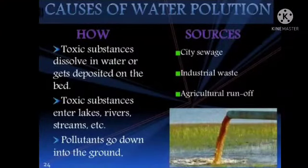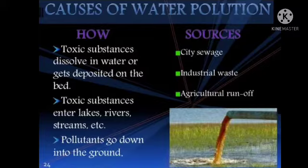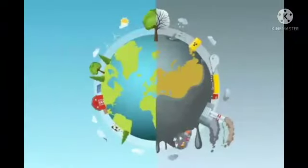Causes of water pollution include toxic substances that dissolve in water or get deposited on the bed, and pollutants that enter lakes, rivers, and streams or go down into the ground. The main sources are city sewage, industrial waste, and agricultural runoff.